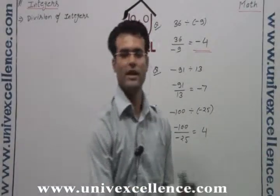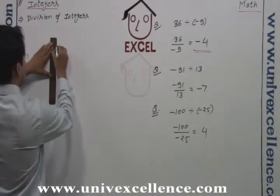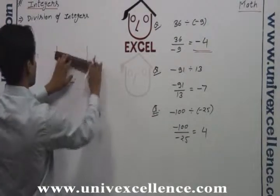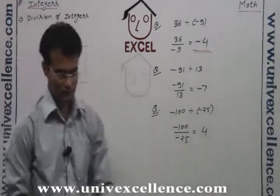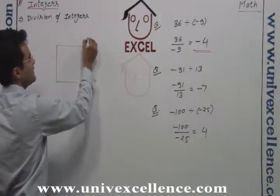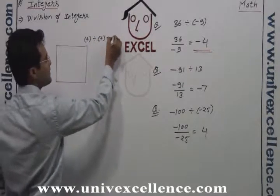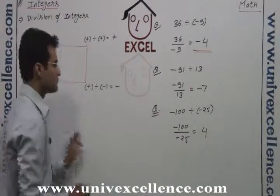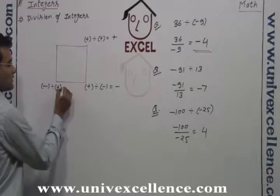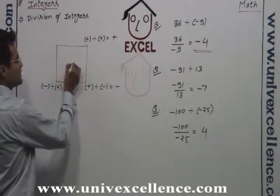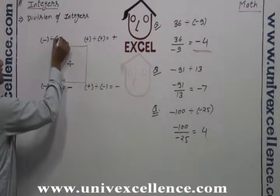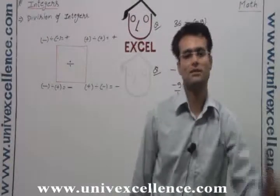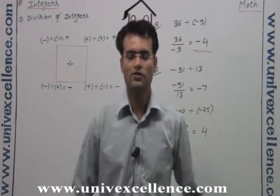For division of integers, we can map the four cases in a square: positive divided by positive is positive; positive divided by negative is negative; negative divided by positive is negative; negative divided by negative is positive. Same signs give positive, opposite signs give negative. This is the division of integers — we have done a recap of addition, subtraction, multiplication, and division of integers.